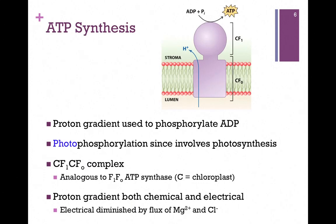Chloroplasts also have an ATP synthase, similar to mitochondria. We call it the CF1-CFO complex, the C indicating it's in chloroplasts. Similar types of domains. We have the CFO domain that's going to translocate protons from the luminal to the stromal side. Remember, it's the luminal side where we're building that proton gradient, and that translocation is tied with the phosphorylation of ADP to make ATP. Notice the catalytic domain is on the stromal side.